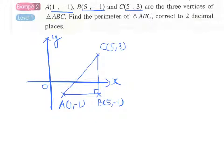AB is 5 minus 1, which equals 4 units. BC is 3 minus negative 1, therefore 3 plus 1, which is again 4 units. For AC we apply the Pythagorean theorem or the distance formula.